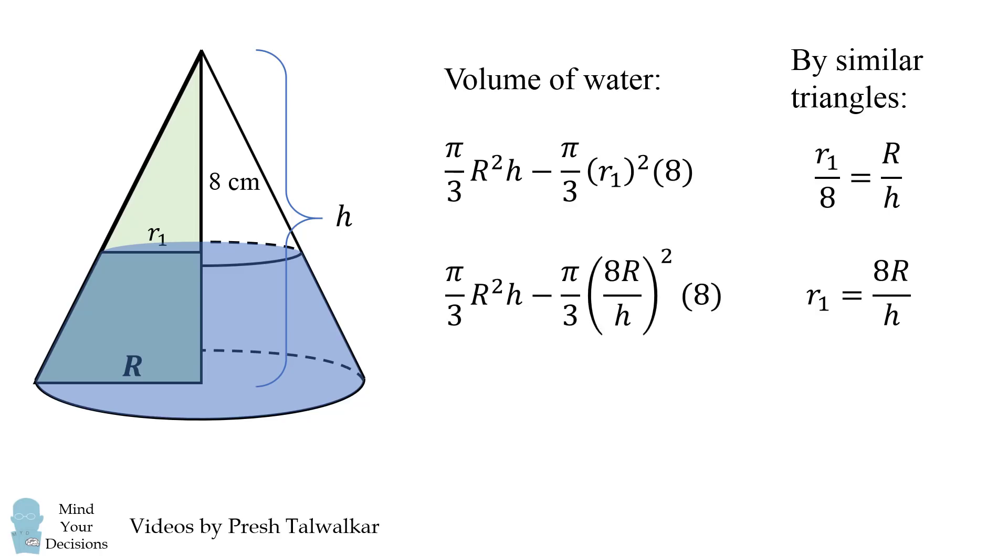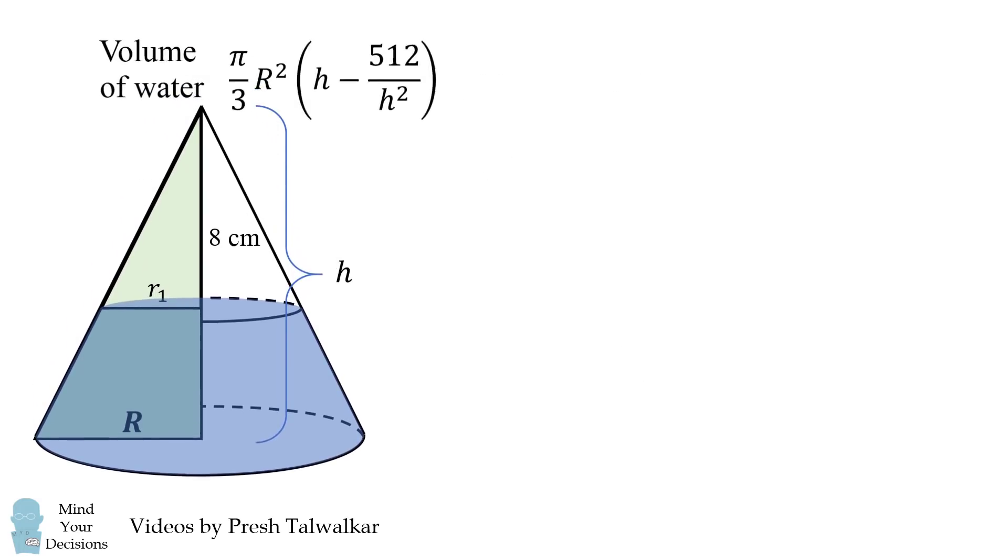We substitute that in and then we simplify to get an equation for the volume of water. It's pi over 3 times r squared times the quantity h minus 512 over h squared. So let's keep that formula in mind and then let's solve for the same sort of formula for the other cone.